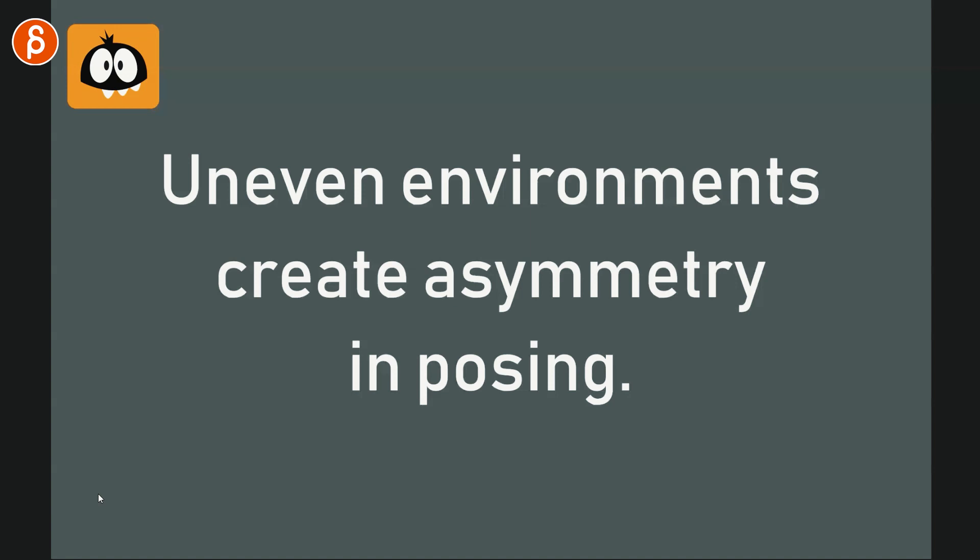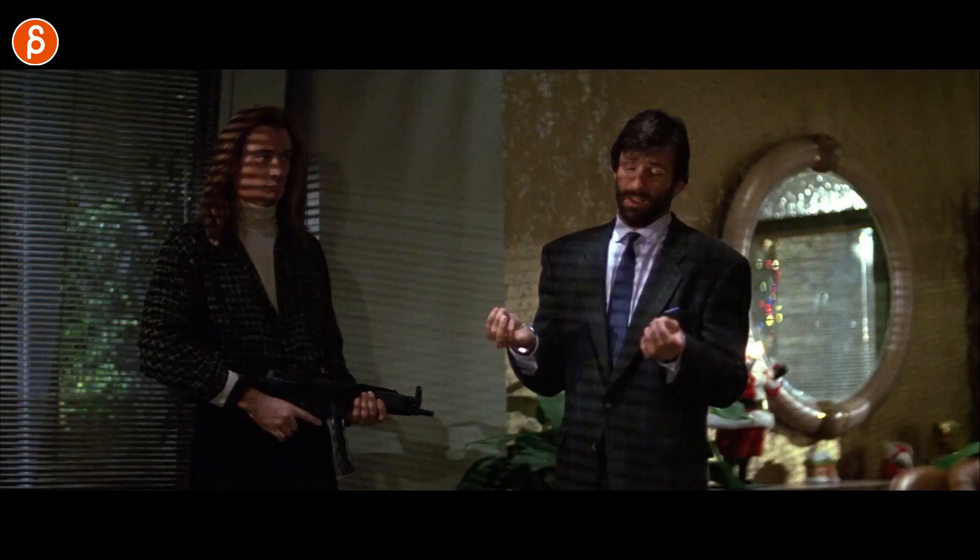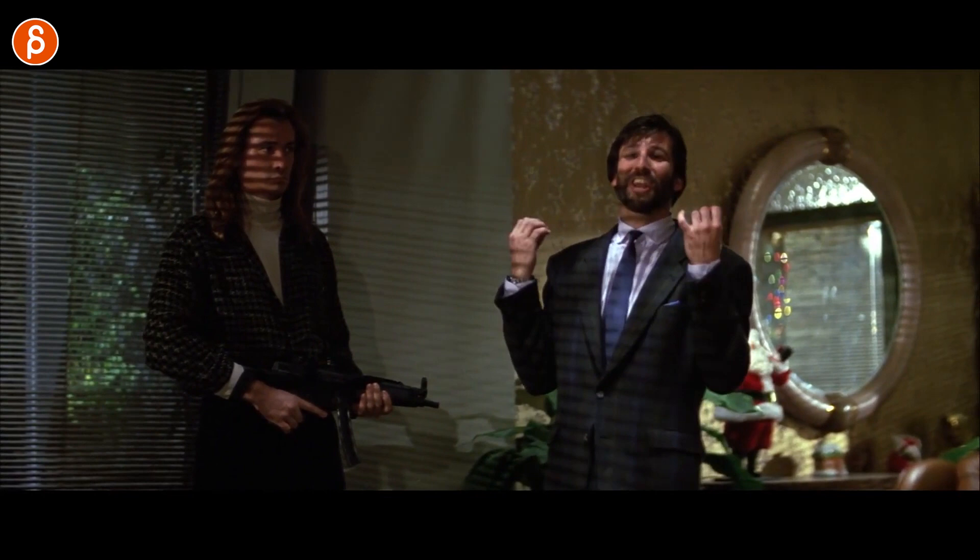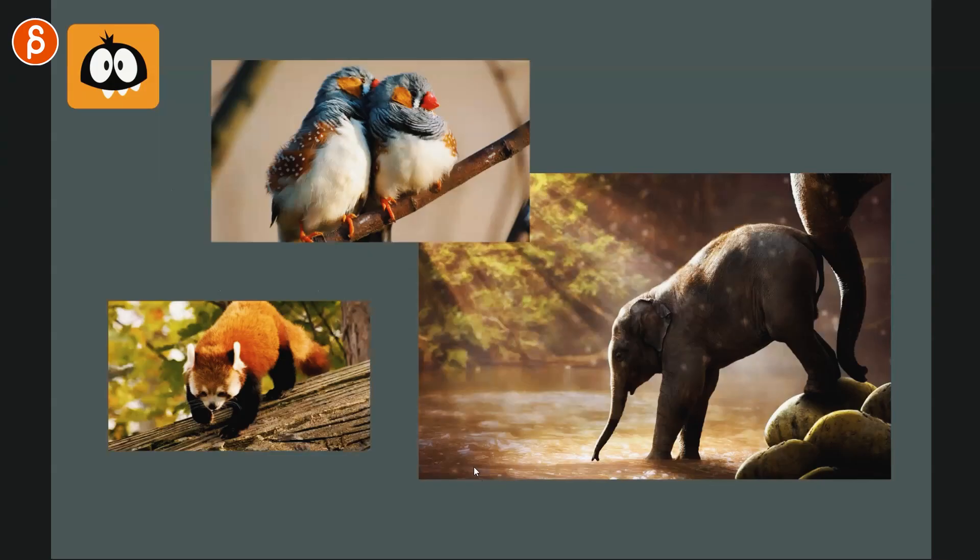What I like a lot about sets is that uneven environments create asymmetry in posing. I tell my students that as they finish blocking, they want asymmetry — specific characters may have symmetry intentionally, but in general asymmetry gives you more dynamic poses with diagonal lines. Sets force you into that asymmetrical pose early on. They give you contrast in posing, contrast in elevation — if you go high and low and get a little jump, that's contrast in timing. Sets give you all those extra elements: texture in posing, timing, all that good stuff.